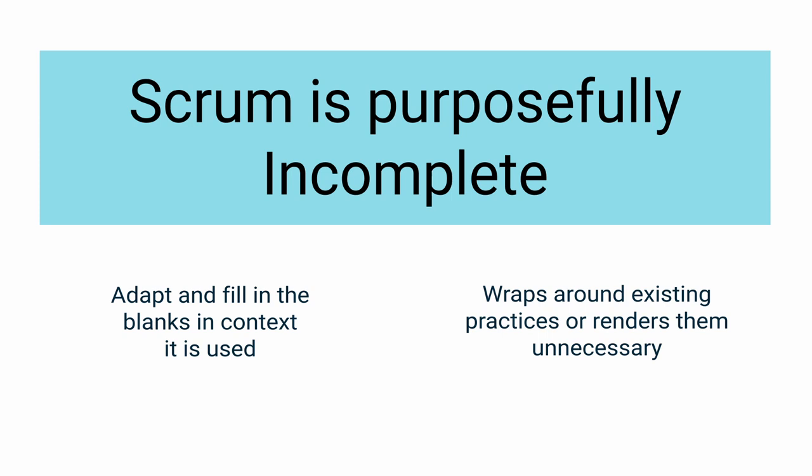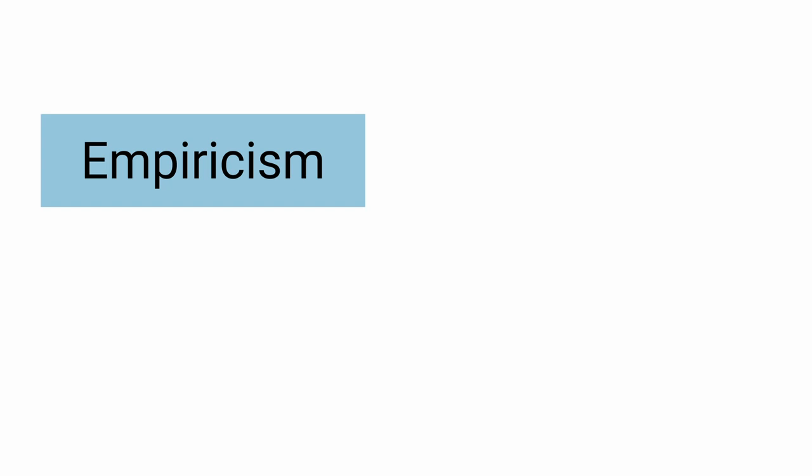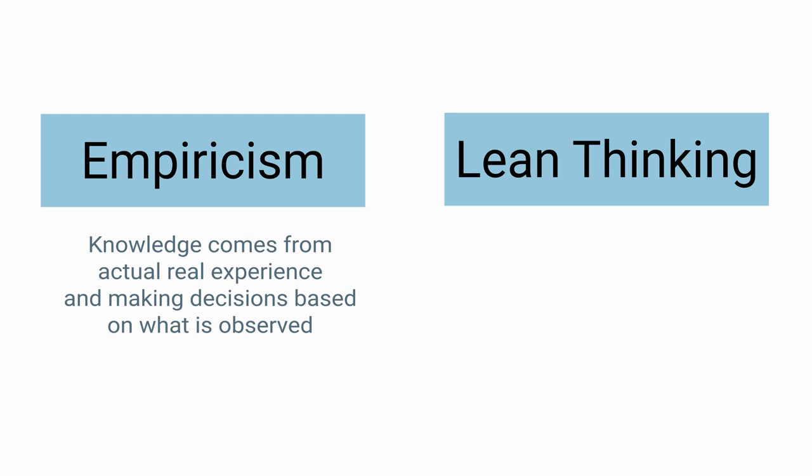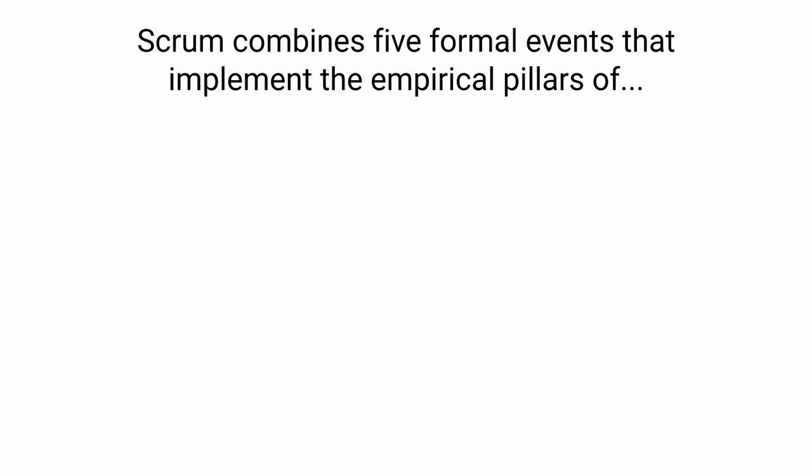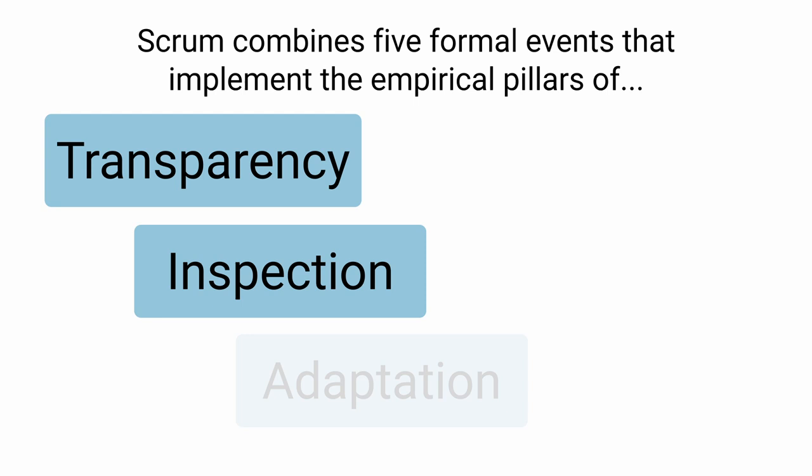Scrum is founded on both empiricism and lean thinking. Empiricism asserts that knowledge comes from actual real experience and making decisions based on what is observed. Lean thinking reduces waste and focuses on the essentials. It combines five formal events that work because they implement the empirical pillars of transparency, inspection and adaptation.